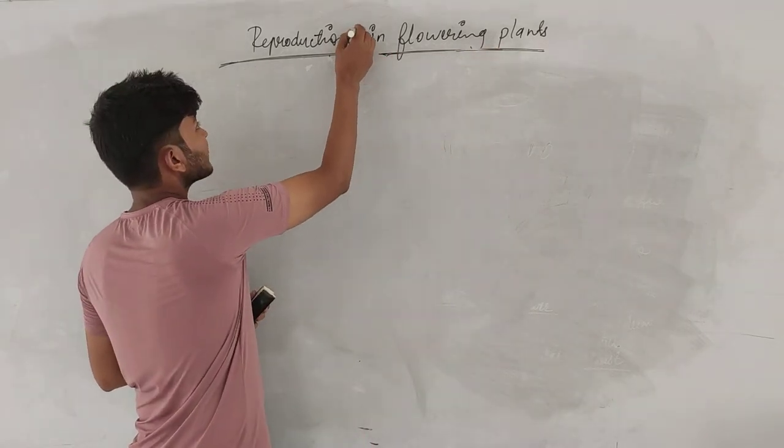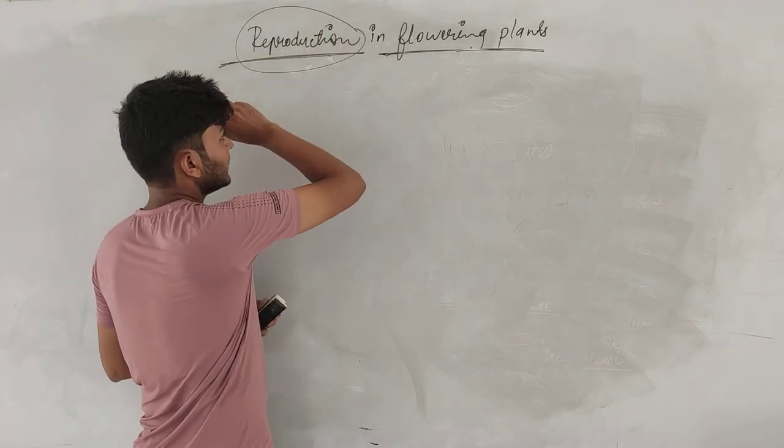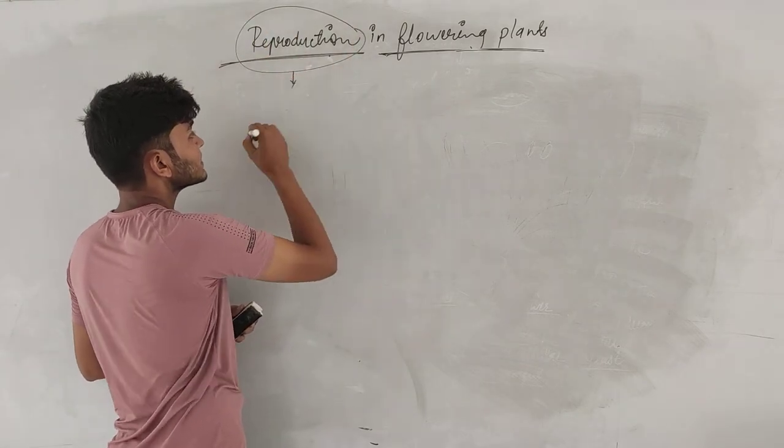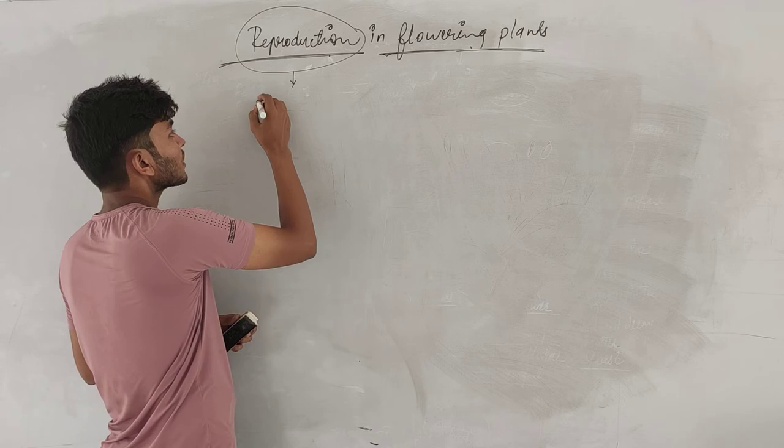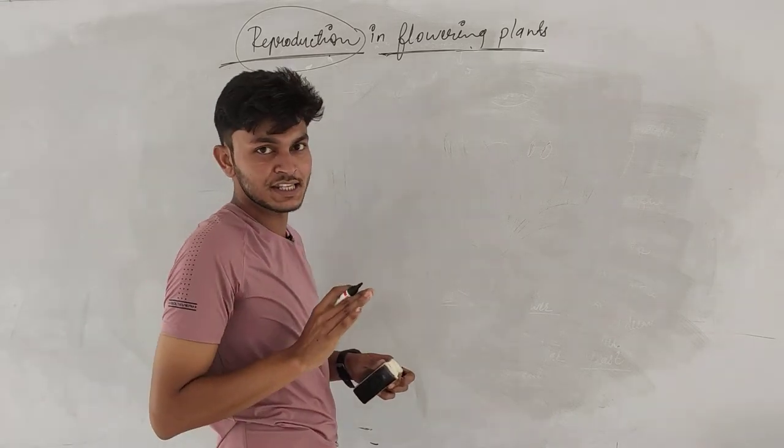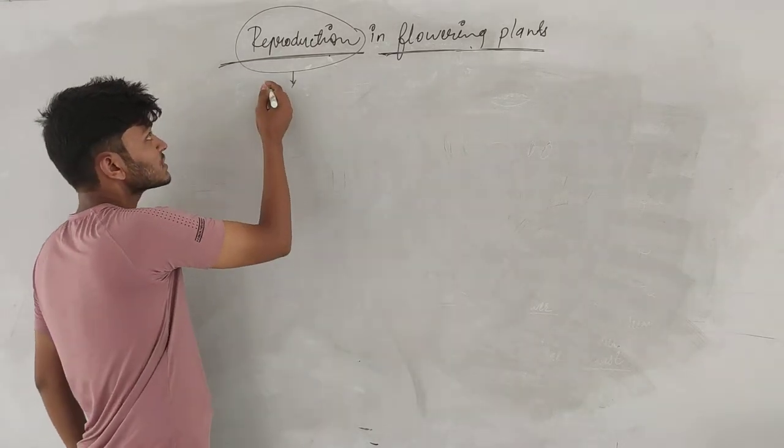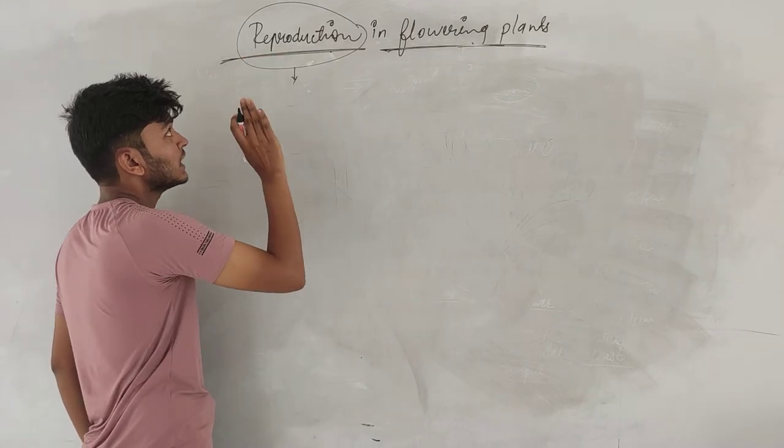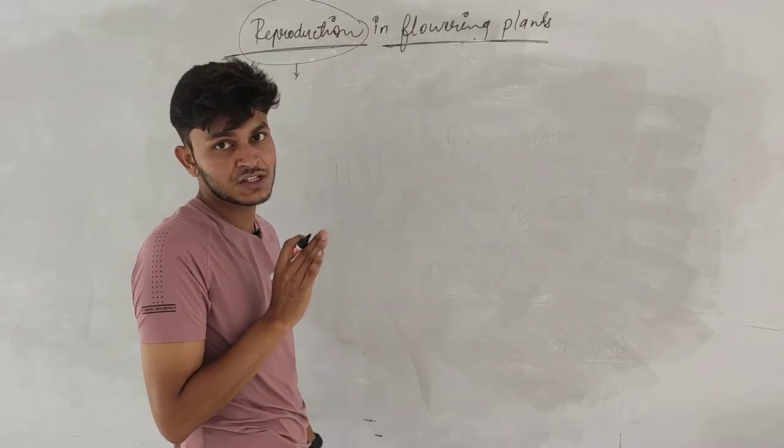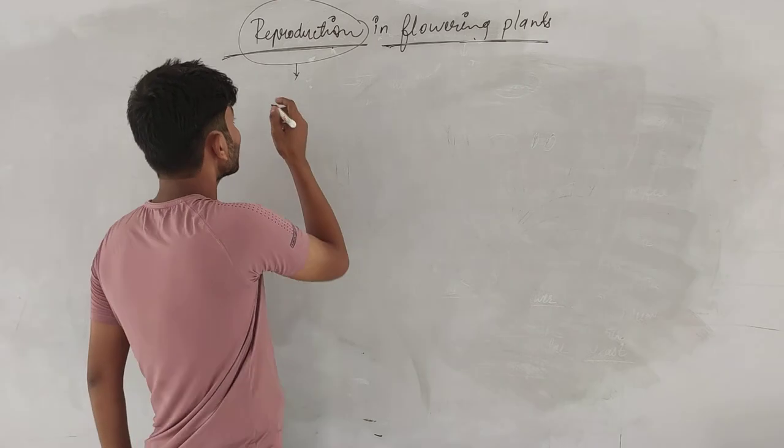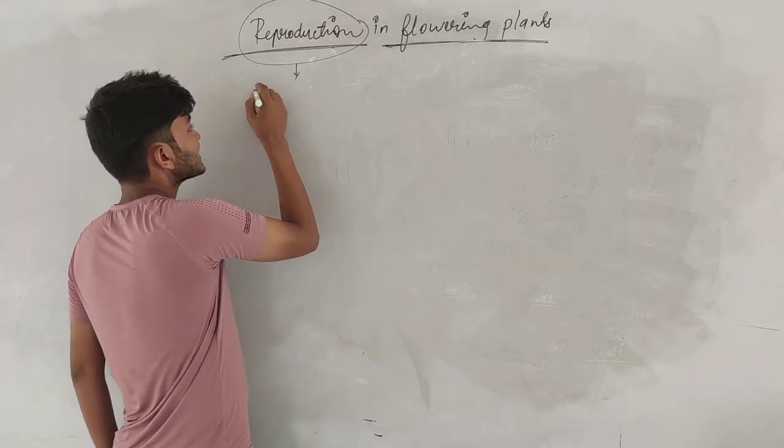You talked about reproduction in the last chapter. What is reproduction? Reproduction in the sense, formation of new organisms from pre-existing organisms. First of all, if there is a new organism, that process is known as reproduction.